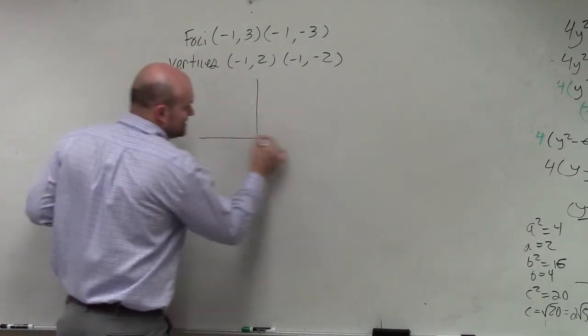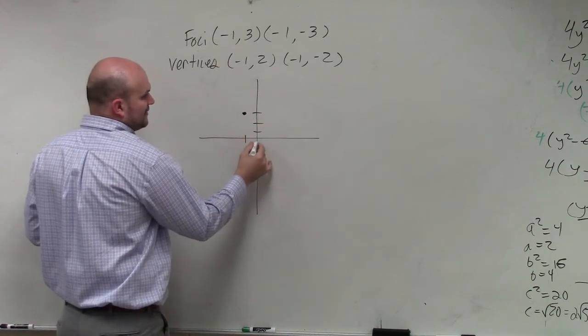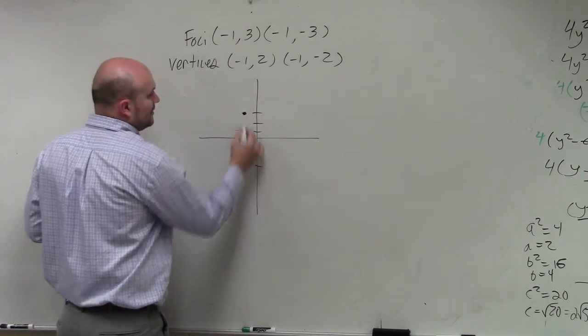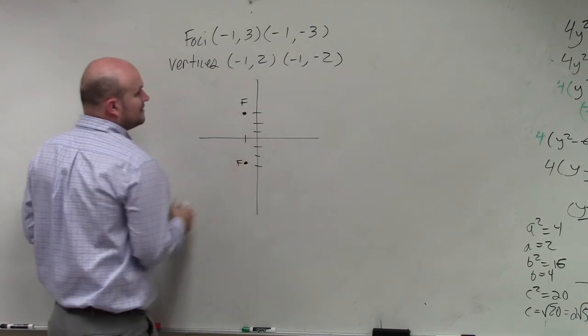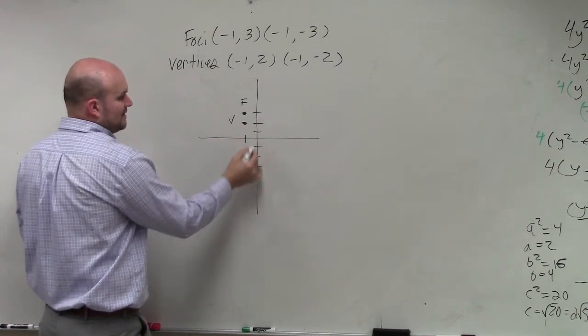So we can plot these points. So we have negative 1, 3, and negative 1, negative 3. Those are your two foci. And then I find my two vertices, which is negative 1, 2, and negative 1, negative 2.